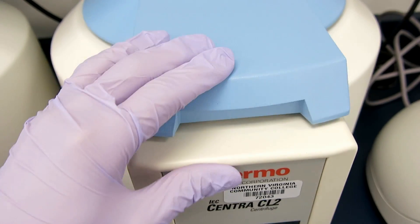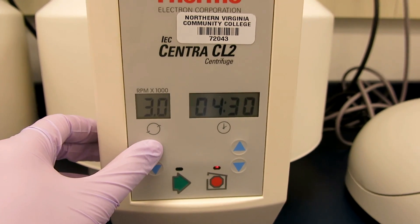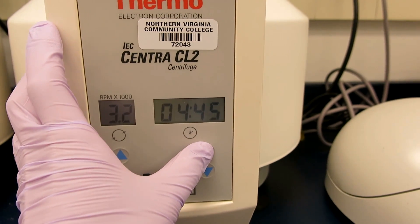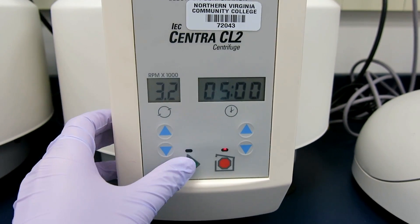Close the lid. You can adjust the speed and time by pressing the blue buttons either up or down. In blood banking, we spin at 3200 RPMs for 5 minutes. Press the green button to start.